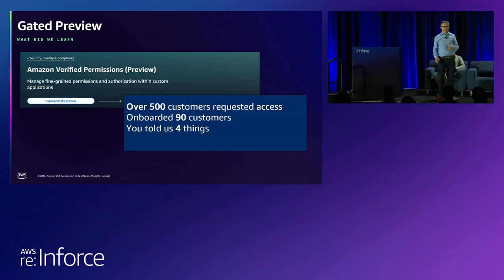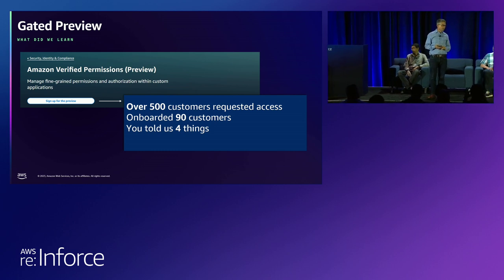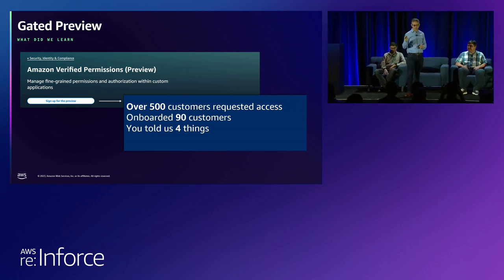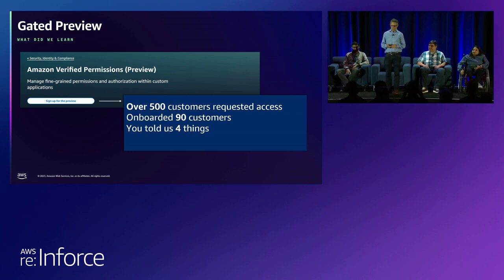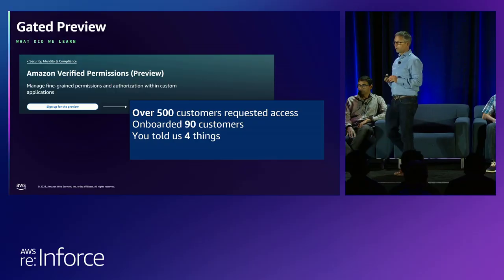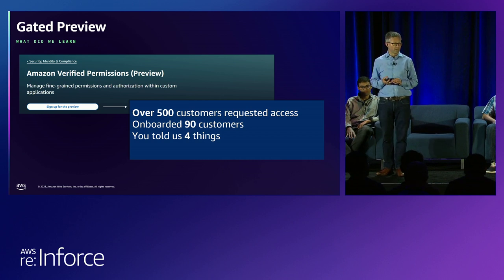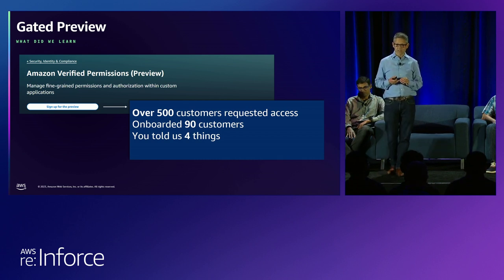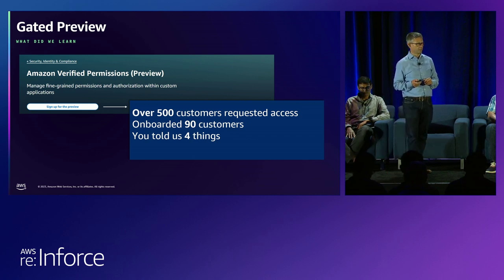Thanks, Neha. Good morning, everybody. I'm Julian Lovelock, product manager for Amazon Verified Permissions, and I'll be joined in a moment by my colleague Abi, my co-product manager. We launched a gated preview of Amazon Verified Permissions back in November at re:Invent. We had over 500 customers request access, we onboarded 90 customers, and we talked to every one of those 90 customers.